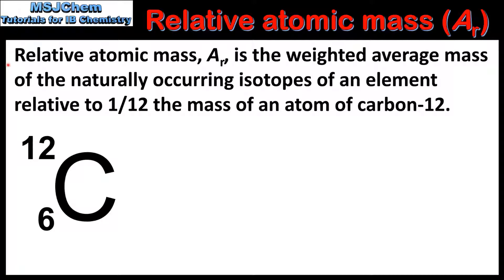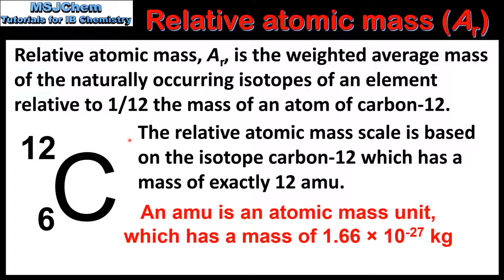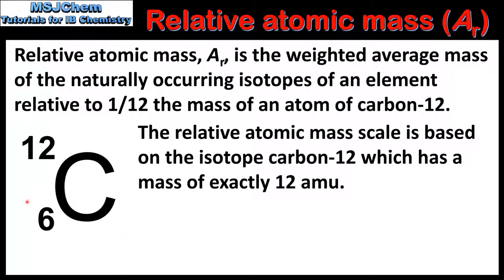Relative Atomic Mass is the weighted average mass of the naturally occurring isotopes of an element relative to 1 twelfth the mass of an atom of carbon-12. The Relative Atomic Mass scale is based on the isotope carbon-12, which has a mass of exactly 12 amu. On the left we can see the symbol for the isotope carbon-12. It is to this isotope that the masses of other atoms are compared.